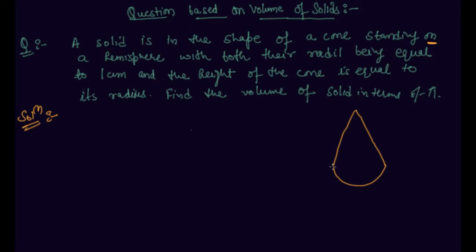So this is the diagram with both their radii being equal. The radii of hemisphere and the radii of cone is equal to one centimeter, and the height of the cone is equal to its radius. So the height of the cone is also one centimeter and this radius is one centimeter.